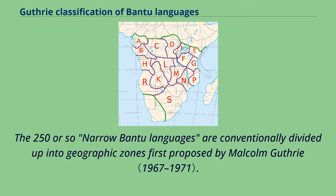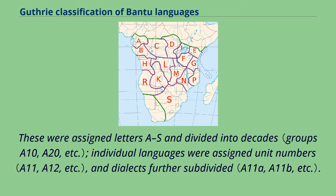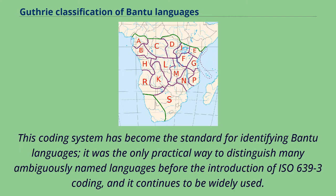The 250 or so narrow Bantu languages are conventionally divided up into geographic zones first proposed by Malcolm Guthrie. These were assigned letters A–S and divided into decades; individual languages were assigned unit numbers, and dialects further subdivided. This coding system has become the standard for identifying Bantu languages. It was the only practical way to distinguish many ambiguously named languages before the introduction of ISO 639-3 coding, and it continues to be widely used.